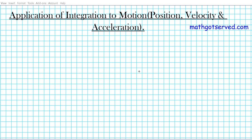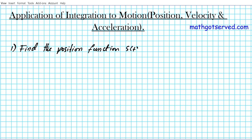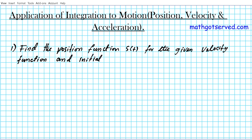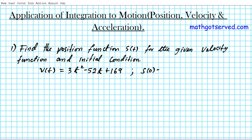Let's take a look at the instructions for question number one. We are to find the position function s of t for the given velocity function and initial condition. The velocity function for this particular example is 3t squared minus 52t plus 169, and we have the initial condition that the position at time t equals 0 is equal to 14.